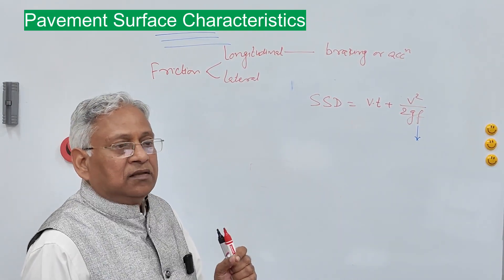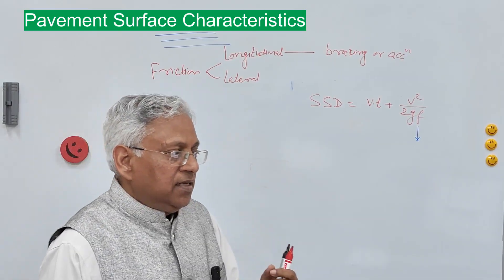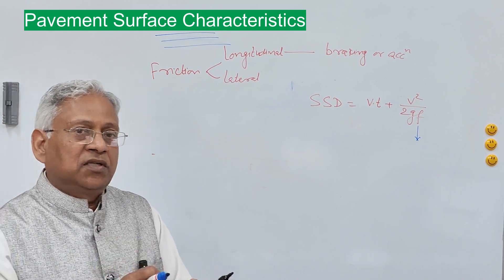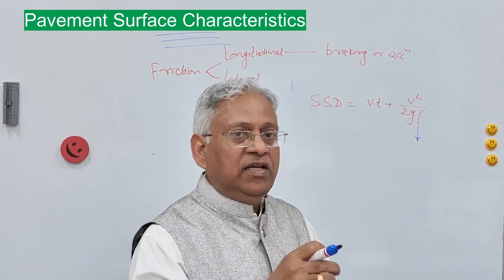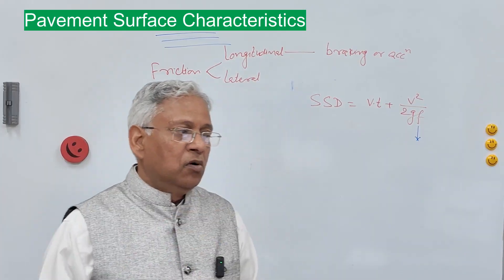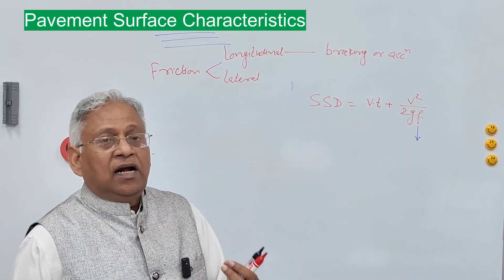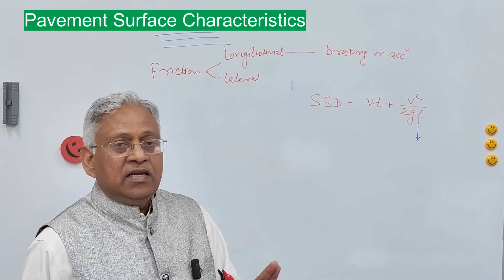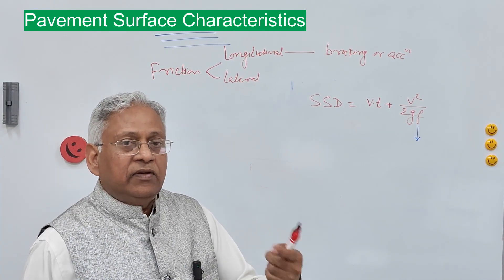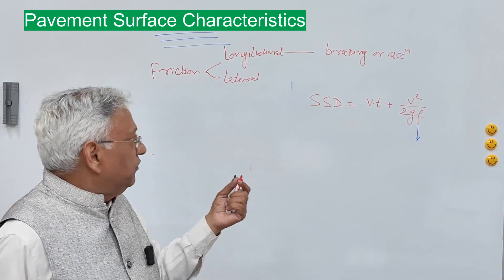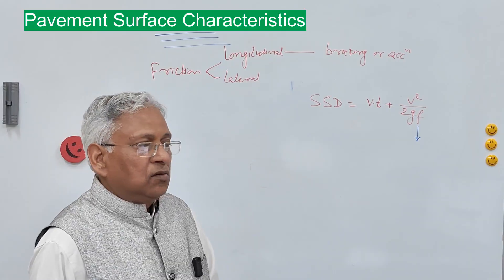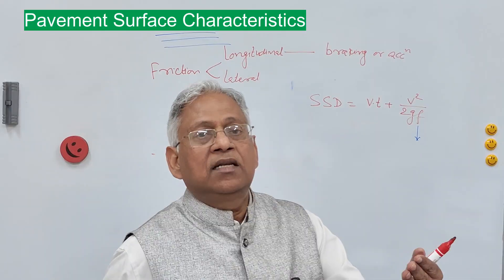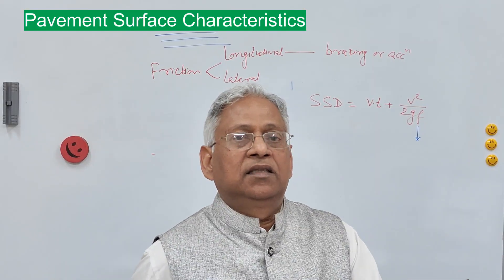When longitudinal friction is reduced, the rotatory motion will increase, because with less friction between the wheel and pavement surface, rotatory motion will be more than translatory motion. In extreme condition, there will be no movement of the vehicle and the wheels will only slip. When longitudinal friction is increased, rotatory motion will reduce and translatory motion will increase — that is called skidding, which causes burning of the tire.